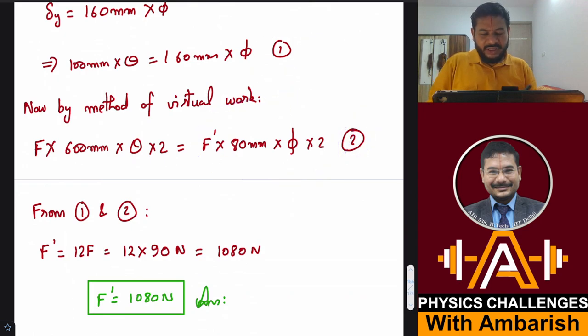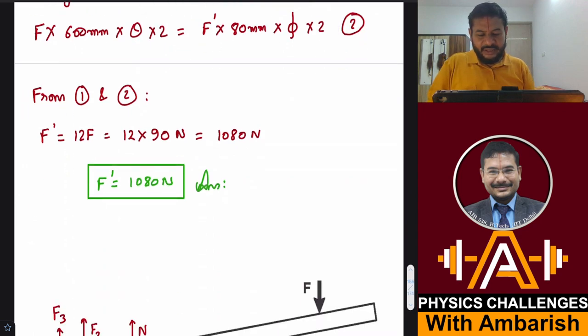Using equation 1 and 2, you can readily calculate. Just divide, theta and phi cancel off, and you get F dash equals 12F. Just put in the value F equals 90 N. So you get F dash is 1080 N. That was the solution using method of virtual work.